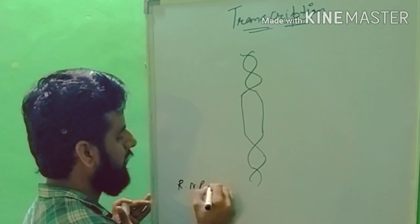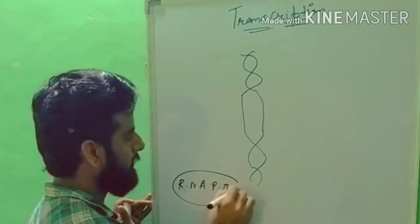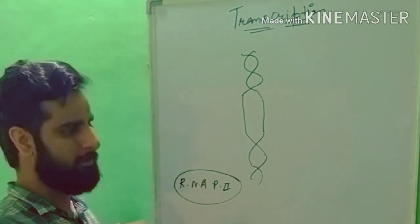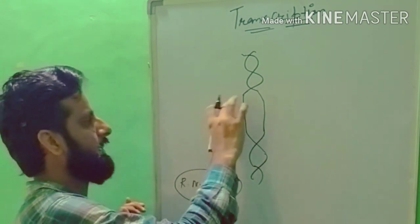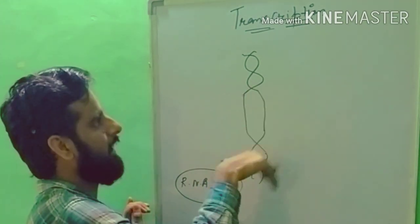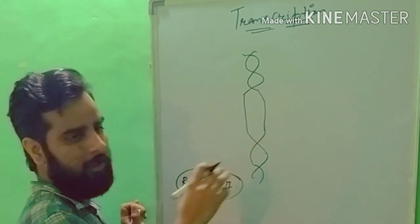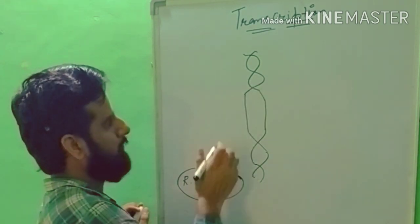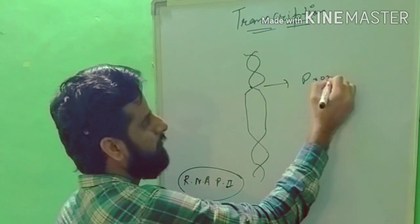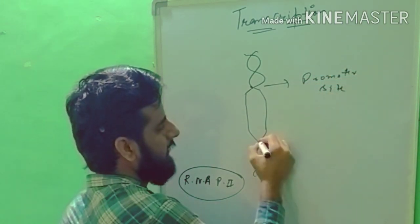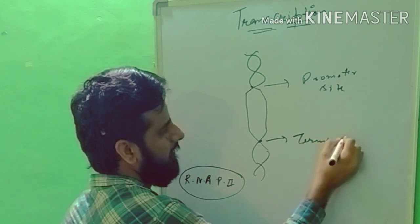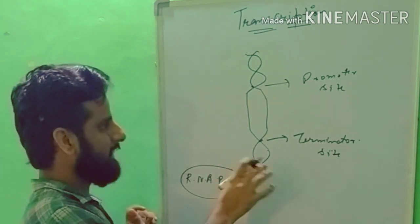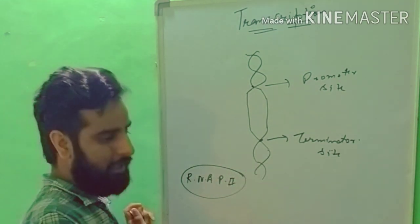For mRNA, RNA Polymerase II is used. In DNA replication, two strands participate, but in transcription only one strand of DNA participates. The transcription produces mRNA. The DNA has two sides: the promoter side and the terminator side, which define the start and end of the transcription process.